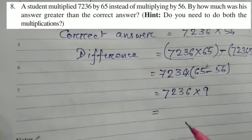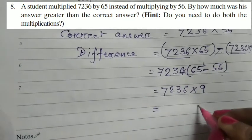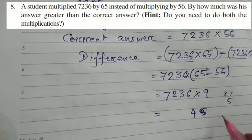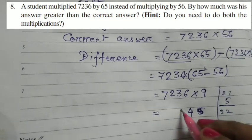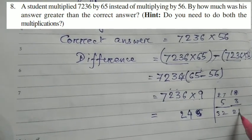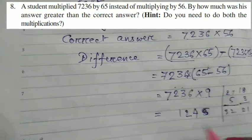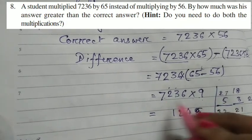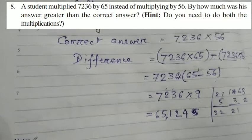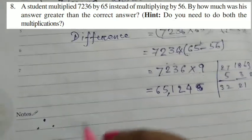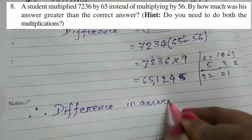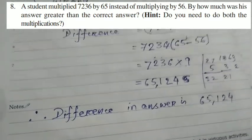I will find the value here. 6, 9 is 54, carry 5. 54, carry 5. 9, 3 is 27 plus 5, 32. 2, carry 3. Now 9, 2 is 18. 18, you will write here. 21. So 1 and carry 2. 9, 7 is 63. 63 plus 2, 65. So 65,124. I will write the answer is, therefore, difference in answer is 65,124.